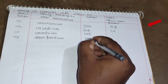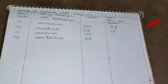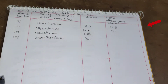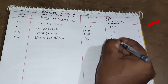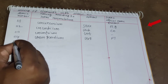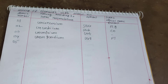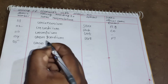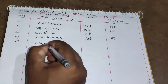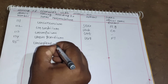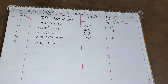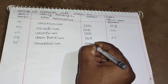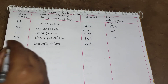The IUPAC official name for element 114 is Flerovium. For element 115: 1 = un, 1 = un, 5 = pent, plus '-ium' gives Ununpentium. The symbol is Uup.